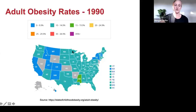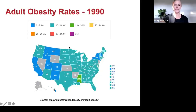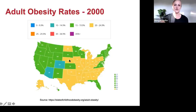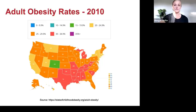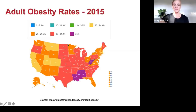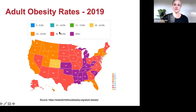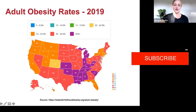Going to 1995, Nebraska was at 15 to 19.9%. In 2000 we moved up to 20 to 24.9%, rising about 1% a year. By 2005 you can see the Southern United States had rising obesity rates faster than the rest of the country. In 2010, Nebraska reached 25 to 29.9%. In 2015 we rose to 30 to 34.9%, and in 2019 — the most recent map — Nebraska remained at 30 to 34.9%, but much of America is moving up to 35% or higher.